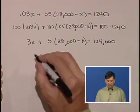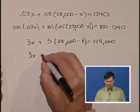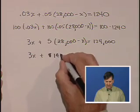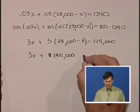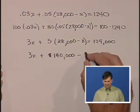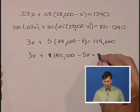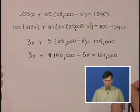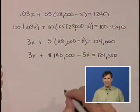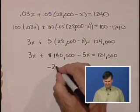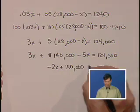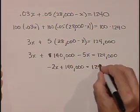Now we're going to distribute out the parentheses. 3X plus 5 times 28,000 is 140,000 minus 5X equals 124,000. We're going to combine like terms. The 3X and the minus 5X is negative 2X plus 140,000 equals 124,000.